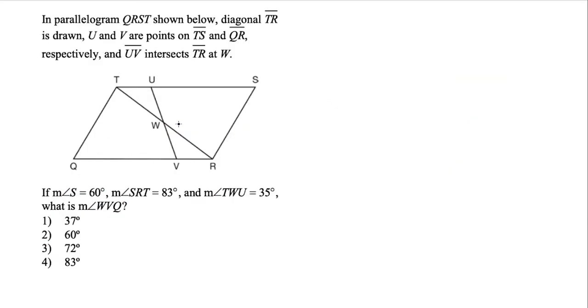So we have another question with the parallelogram here, and this time around we have the measure of angle S is 60 degrees. We have the measure of angle SRT, that's over here is 83 degrees. And we have the measure of angle TWU is 35 degrees. So this angle in here is 35 degrees. And we want to find the measure of angle WVQ, that's this angle over here. So I'll just put an X in this location.